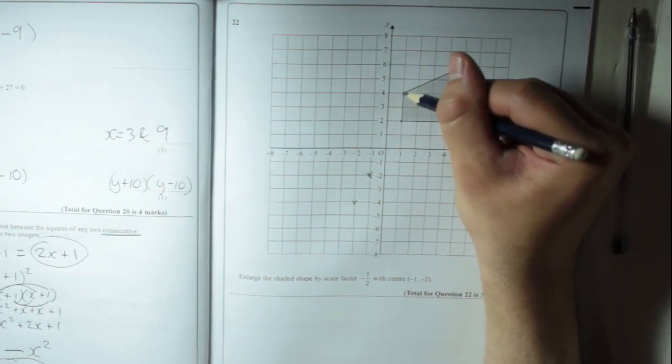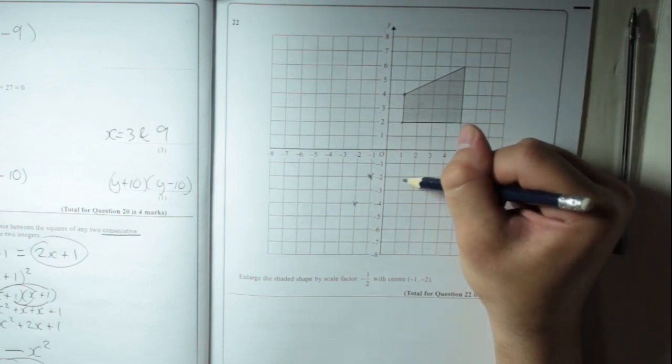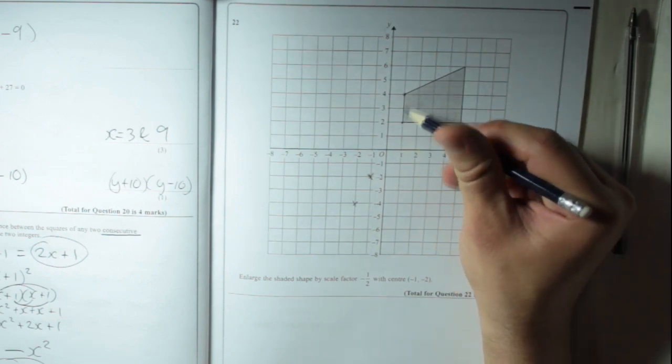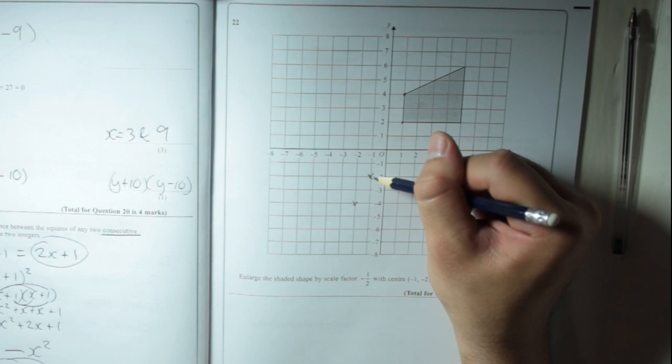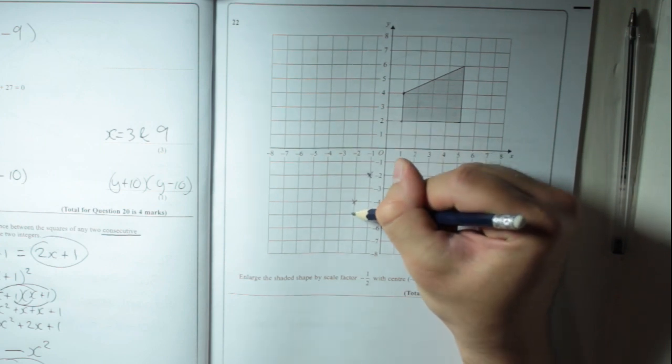Now to do this one, that's 2 right and 2, 4, 6 up. So that means we're going to go 1 left and 3 down. So 1 left and 1, 2, 3 down.